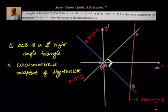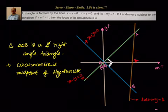So the approach is: first, solve the given equations to find the coordinates of A and B. Once we get A and B, we find the midpoint of AB. After that we equate that to the circumcenter h comma k. Then we use the condition l squared plus m squared equal to 1 to get the locus of the circumcenter.